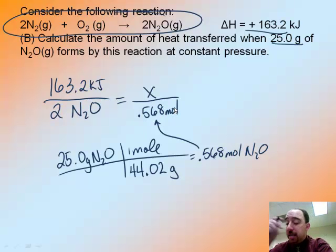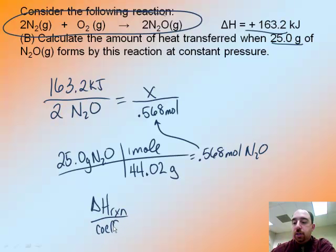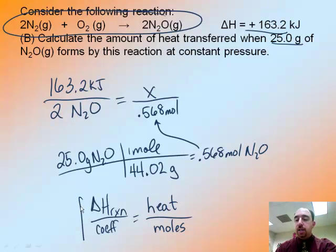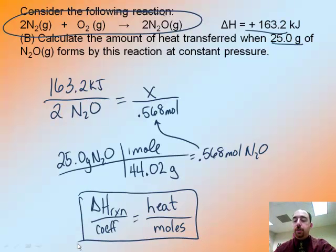Because there is no actual formula to set this up, it's just a ratio. Basically what you're going to have is you have the delta H of your reaction over the coefficients equal to the heat that you're looking for from the actual number of moles used. So the delta H of my reaction over the coefficient from the chemical reaction is equal to the heat produced or absorbed from that number of moles. So I cross multiply and I solve for X.